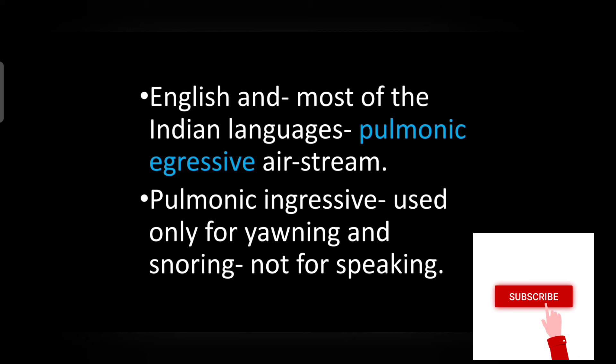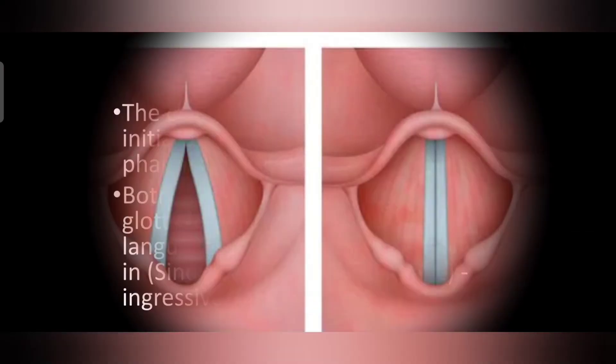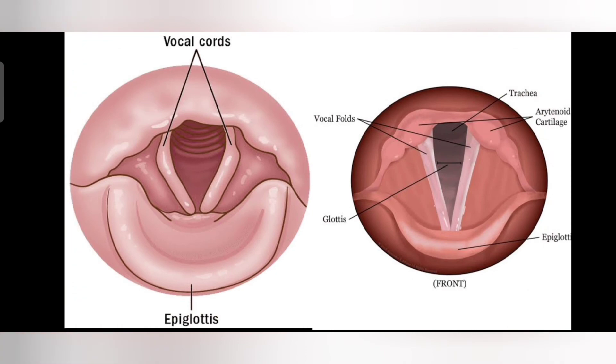The next one is glottalic airstream mechanism. In this airstream mechanism, the closed glottis acts as an initiator, and the air in the pharynx area is used. Both glottalic egressive and ingressive airstream are used in some languages in the world. Glottalic ingressive is used in Sindhi language, which is an Indian language. This is the image of the glottis.